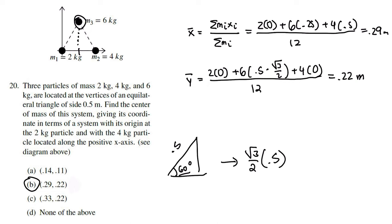For most center of mass questions, you're given n particles, or sometimes a bent wire where you treat each segment as its own object. For a continuous mass distribution (usually on the FRQ), you substitute the summation with an integral in terms of dx. Typically, they'll give you the linear mass density λ = dm/dx, and you make that substitution to solve the integral.